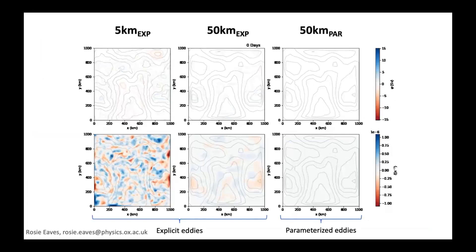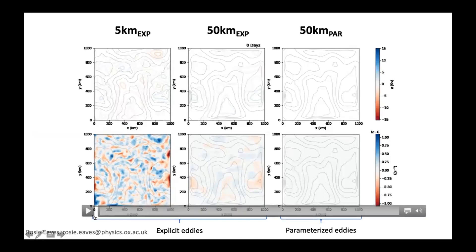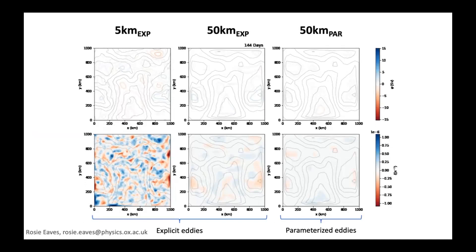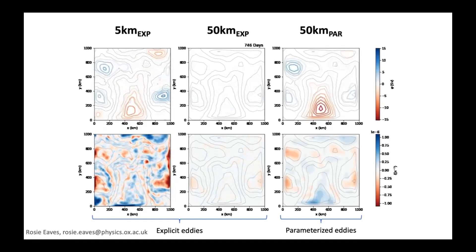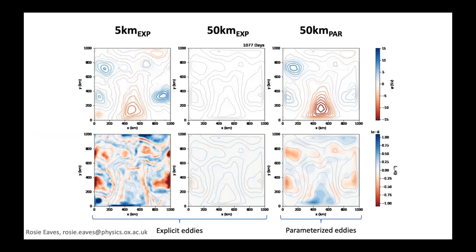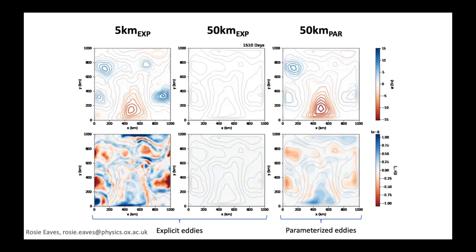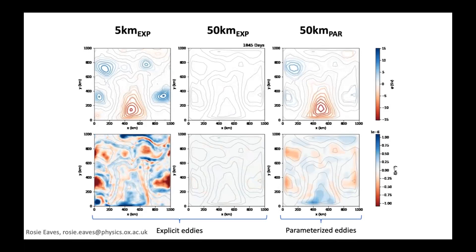Comparing 5 km explicit eddies, 50 km explicit eddies, and 50 km parameterized eddies — showing stream function on top and relative vorticity on the bottom — with time-mean values for the explicit-eddy runs and instantaneous values for the parameterized run. Grey lines are topography. We see a topography-following flow in the 5 km mean and similarly in the 50 km parameterized run. These are on the same scale; in the 50 km explicit-eddy case the flow magnitude is so small you can't see it. As we decrease resolution, we increase bi-harmonic dissipation. The parameterization does produce a topography-following flow.